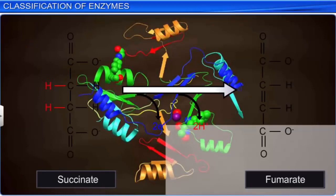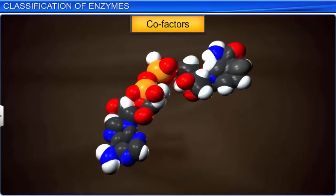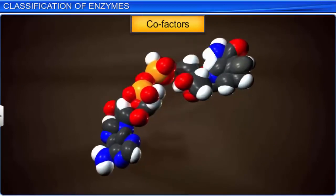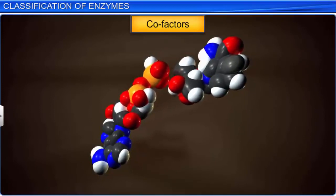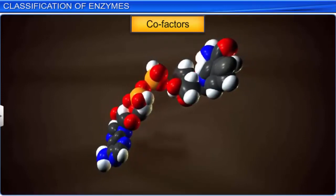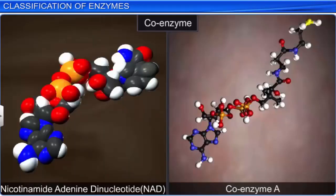Coenzymes are also organic compounds which get bound to apoenzymes for a brief period during catalysis. In fact, coenzymes act as cofactors in a number of different enzymatic reactions. Common examples of coenzymes are NAD or nicotinamide adenine dinucleotide and coenzyme A.